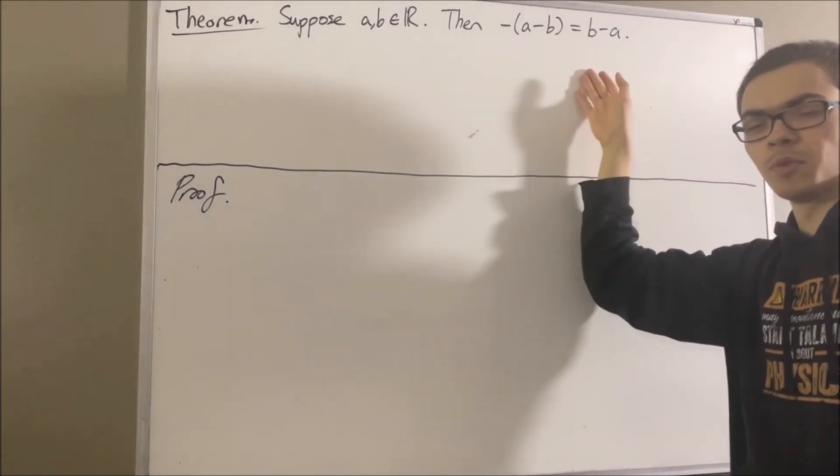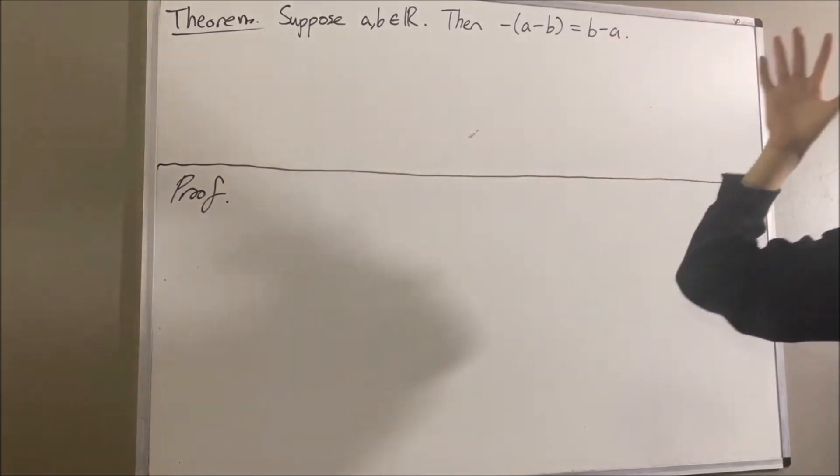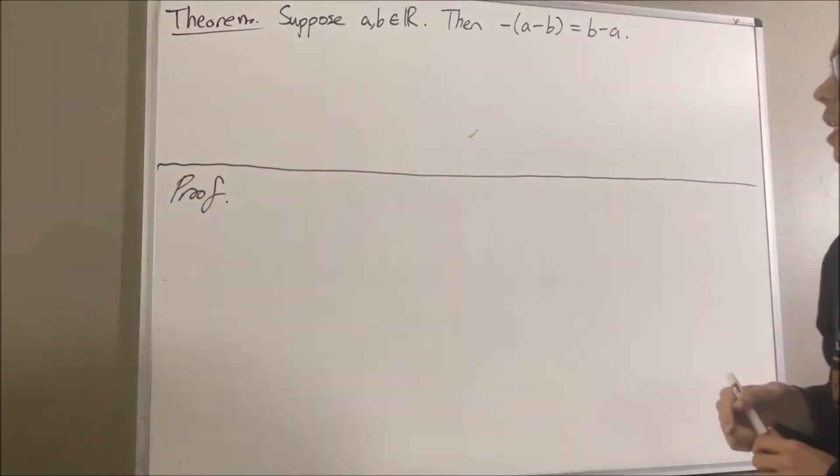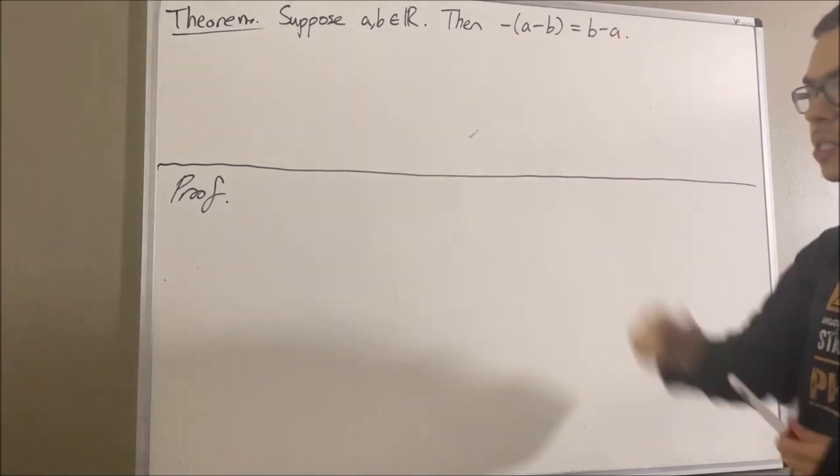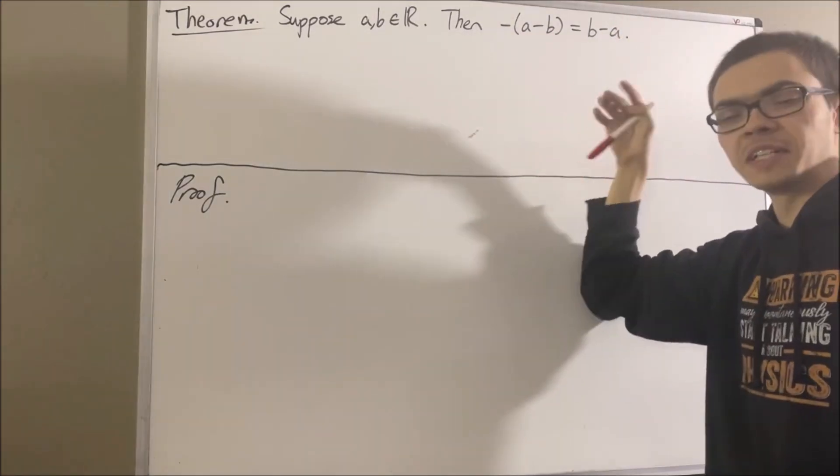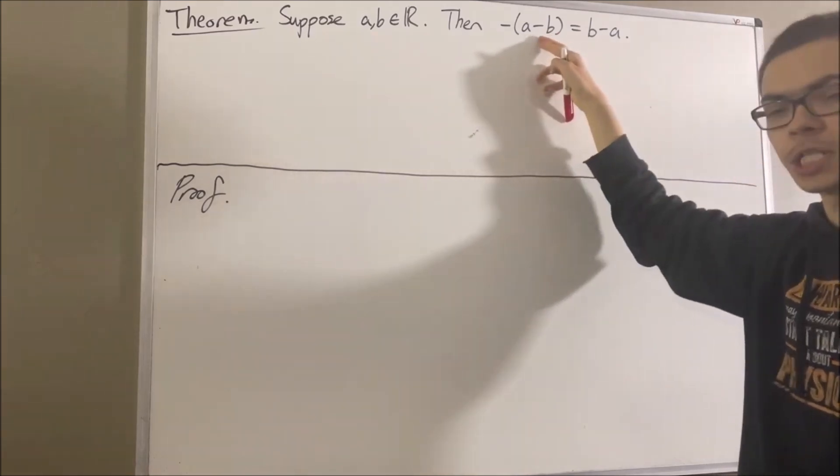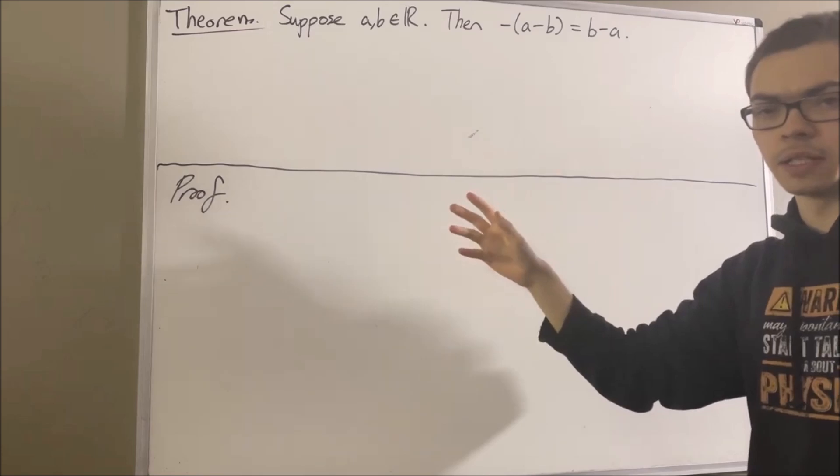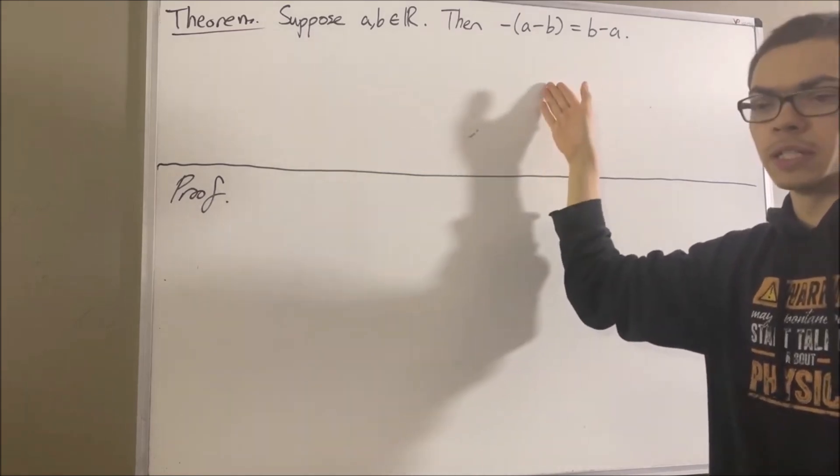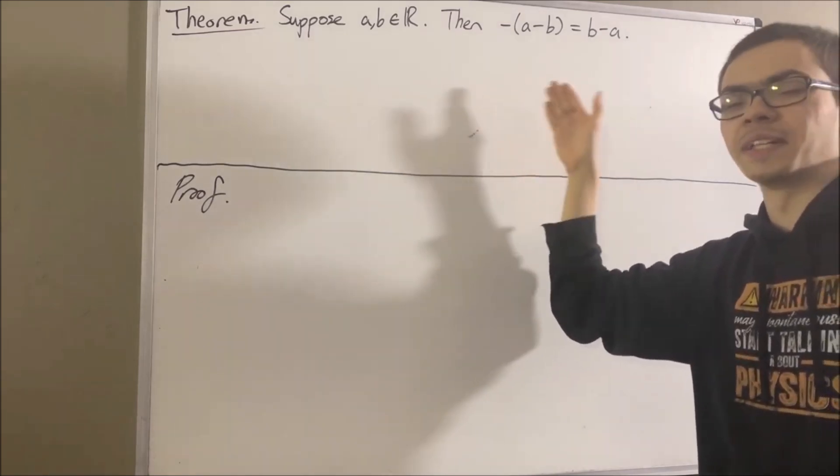Now, in proving this theorem, we are going to rely on some facts which come from the field properties of the real numbers, and also a definition for subtraction of two real numbers. So first, the definition we're going to use for subtraction is, for any two real numbers A and B, A minus B is defined to be A plus the negative of B.